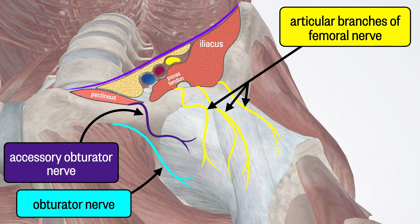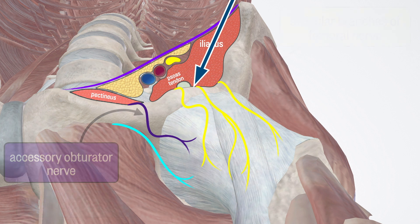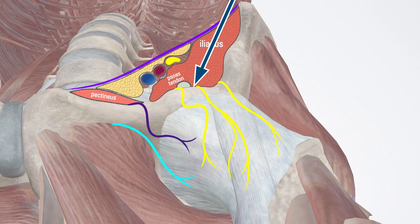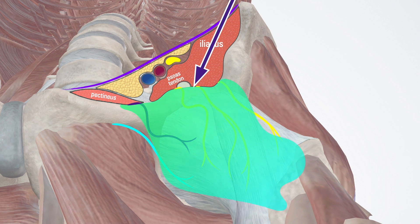During a PANG block, a needle is advanced from the lateral aspect and contact is made with the superior pubic ramus, just lateral to the psoas tendon. Cadaver studies have shown that injectate here will spread along the pelvic brim as well as in a caudal direction along the joint capsule. Note that the iliacus muscle separates the injection point from the femoral nerve, so no motor fibers are blocked with this technique, provided the local anesthetic is deposited deep to the muscle.